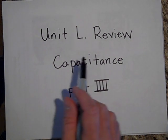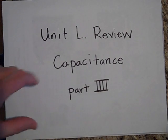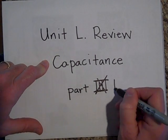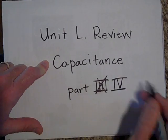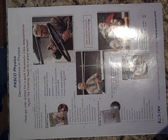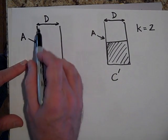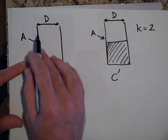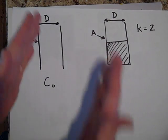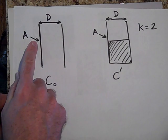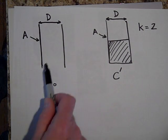Alright, last one. Unit L review, capacitance part four. Okay, so here we have a capacitor. These aren't lines, these aren't wires, these are actually plates. They're a distance d apart and they have an area A. Let's call the capacitance as it is right now c naught.